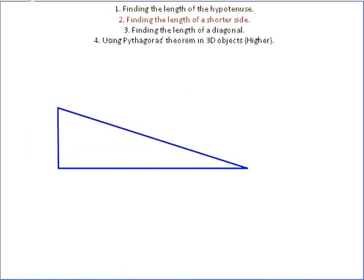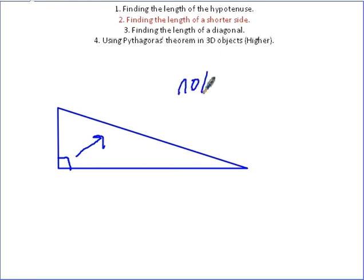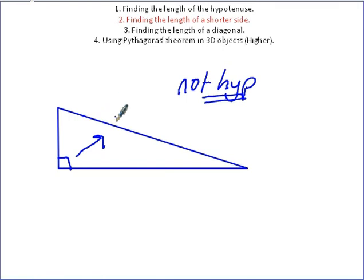Section two: let's find the length of a shorter side. It could be either of the two shorter sides — all you need to know is that it's not the hypotenuse. You'll always be given the hypotenuse length. So let's use some smaller numbers this time. Let's say one side is 1.07 centimetres and the hypotenuse is 0.3 centimetres — actually we're trying to find this length here.